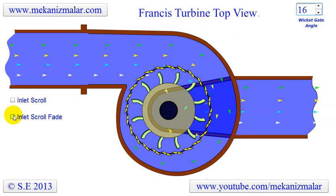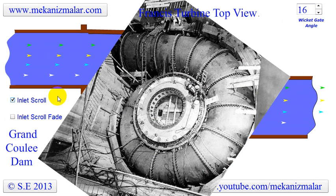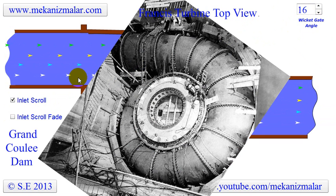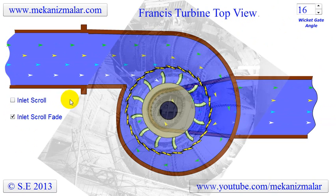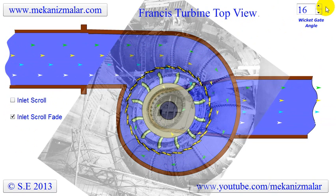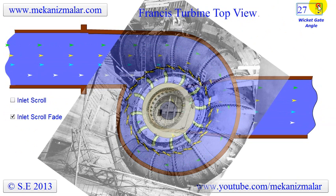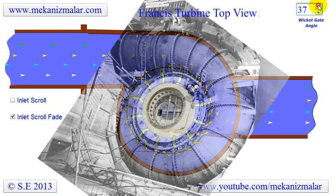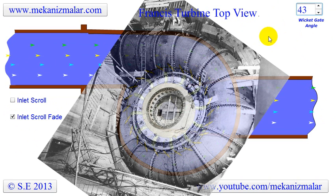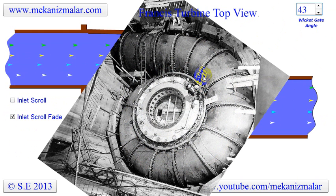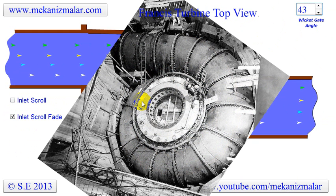Here we see the actual inlet scroll used in Grand Coulee Dam, and the same picture superimposed on our animation with a fading effect. Seeing the animation and actual image gives you some idea of the operation of the turbine. If you notice, four workers and a long ladder are located in the image, which gives you some idea about the sheer size of the inlet scroll.